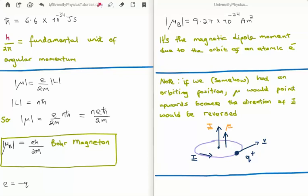Otherwise all of our magnetization would be in the direction of applied fields. So the magnitude of the Bohr magneton is 9.27 times 10 to the minus 24 amps meter squared. And it is the magnetic dipole moment due to the orbit of an atomic electron.